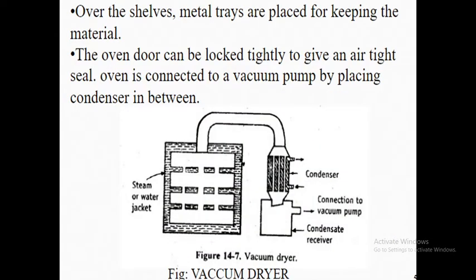Over the shells, metal trays are placed for keeping the material. The oven door can be locked tightly to give an airtight seal. The oven is connected to a vacuum pump by placing a condenser in between. This figure shows the vacuum dryer.